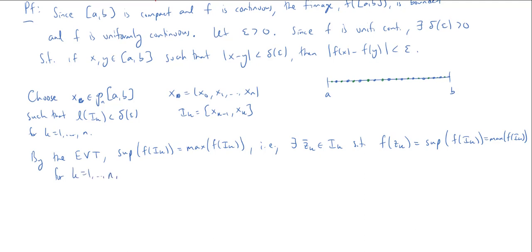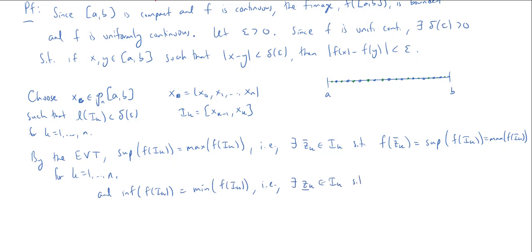Similarly, we get a minimum, and hence a point z_k (lower bar) in Iₖ such that f(z_k lower bar) equals the infimum of f on Iₖ, which equals the minimum of f on Iₖ, for k = 1 to n.